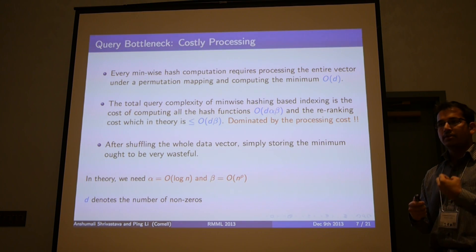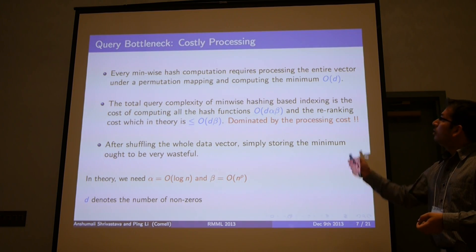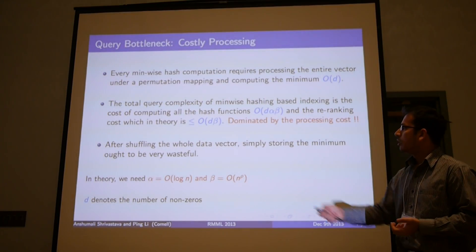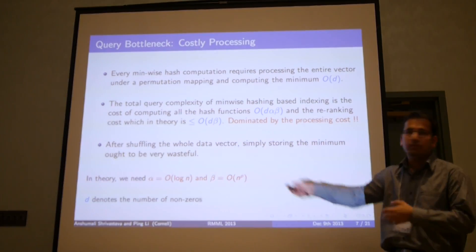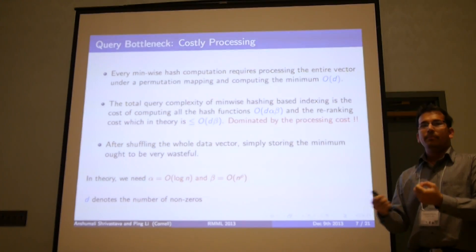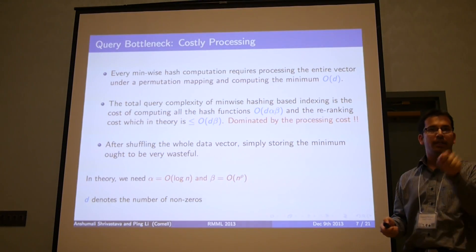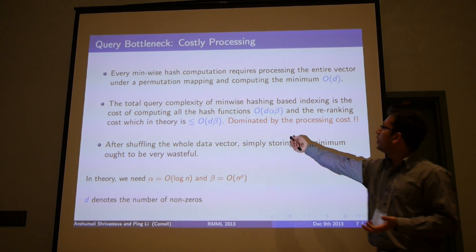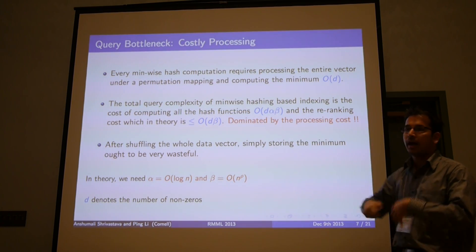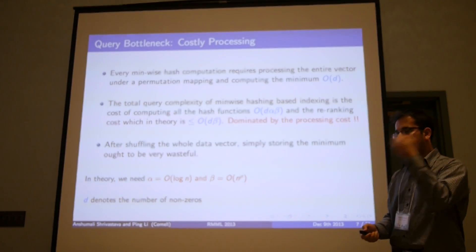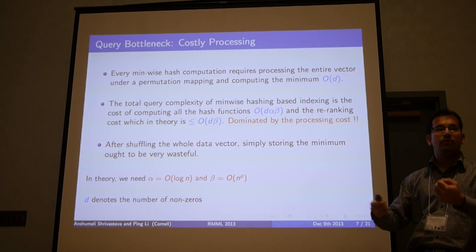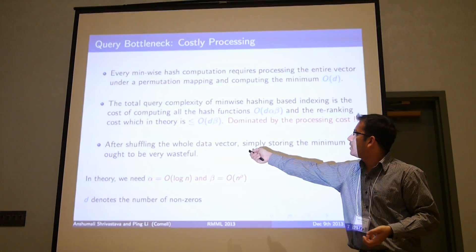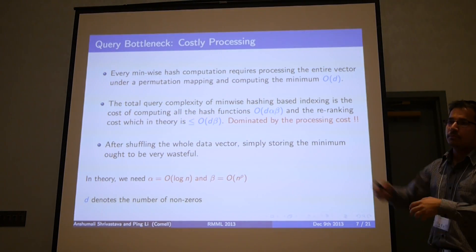The algorithm is very nice because it eliminates the requirement for doing a linear scan. But then it comes to the problem of costly pre-processing. Remember, we need to compute α times β hash signatures. Typically, for theory, we need α is of the order of log n, and β is n to the power of ρ, for some ρ less than 1. For minwise hashing, I need to first process a full permutation over the data and then compute the minimum. If I assume that d is the number of non-zeros, then this is big O of d operation. If I am computing α and β different hash functions, then this is big O of d times α and β hash evaluations. The query time is actually dominated by the processing of query computation.